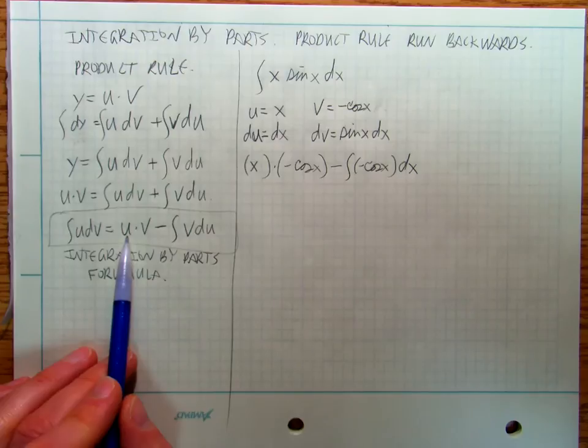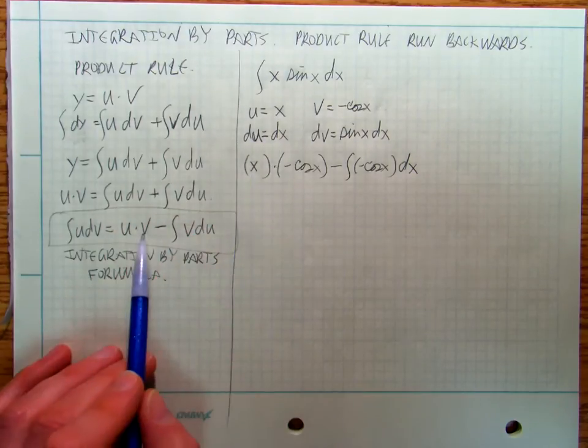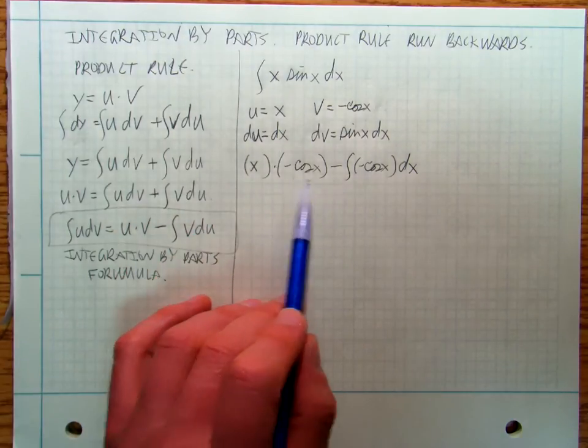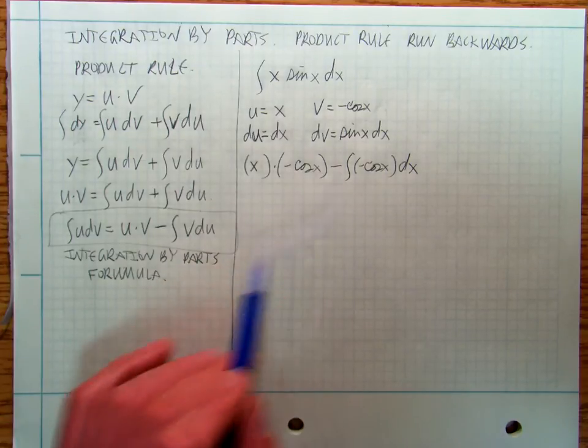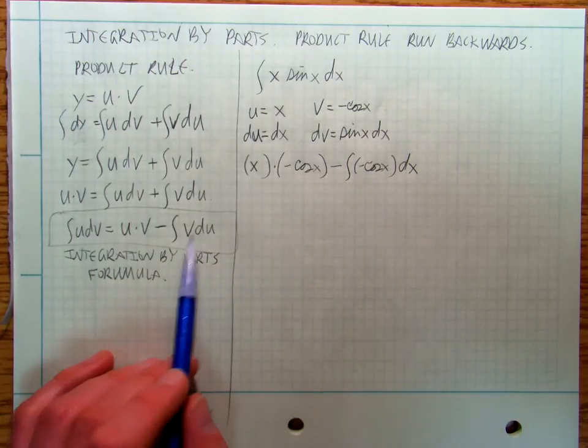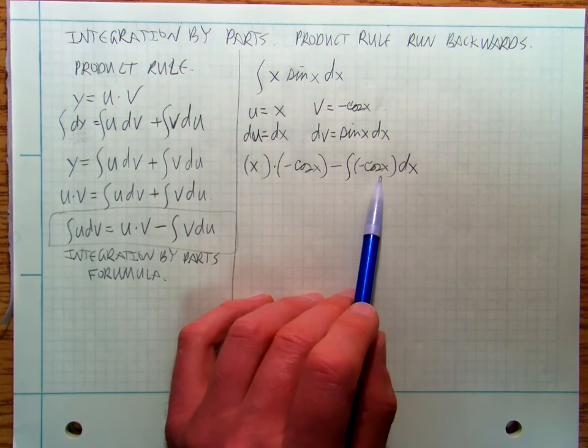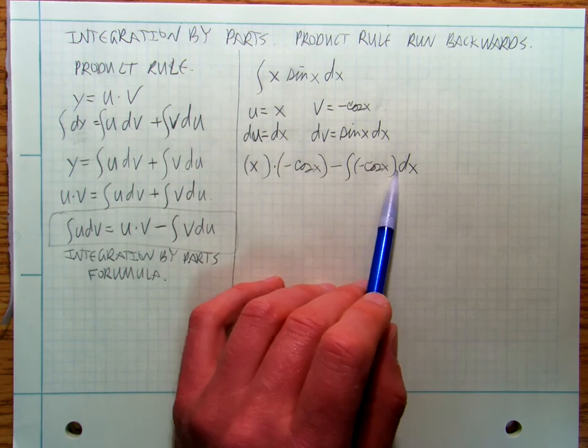So I've just filled it out: u is x, v is negative cosine x, minus the integral of v times du, which is negative cosine x times dx.